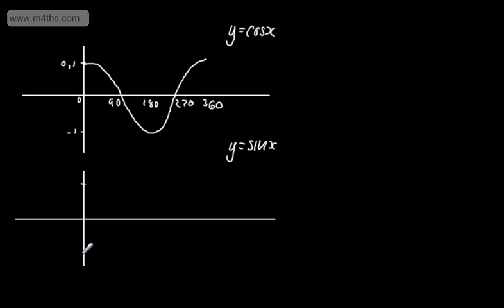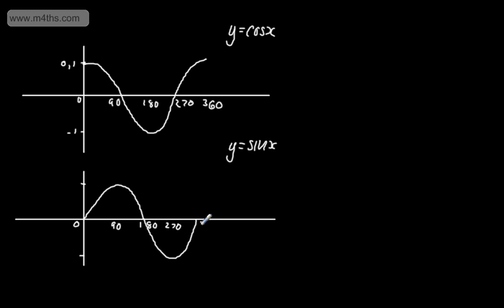For sin x, we have a maximum of 1 and a minimum of minus 1. These graphs are simply transformations of one another by 90 degrees. Sin x comes up to the maximum, down to the minimum, and back up to the x-axis. The maximum occurs at 90 degrees and the minimum at 270 degrees, whereas with cos x, the maximum is at 0 and 360, and the minimum is at 180.